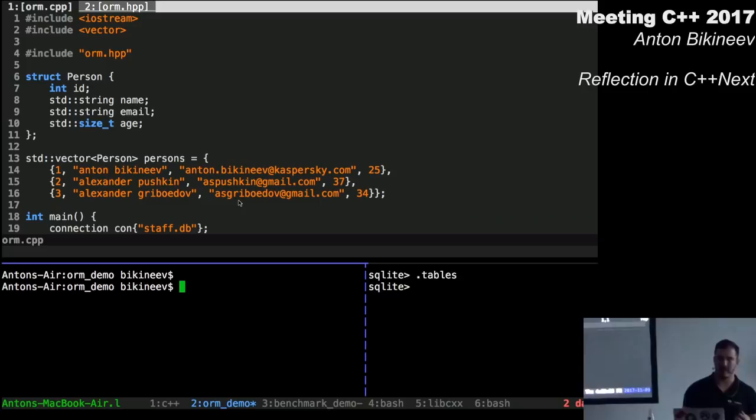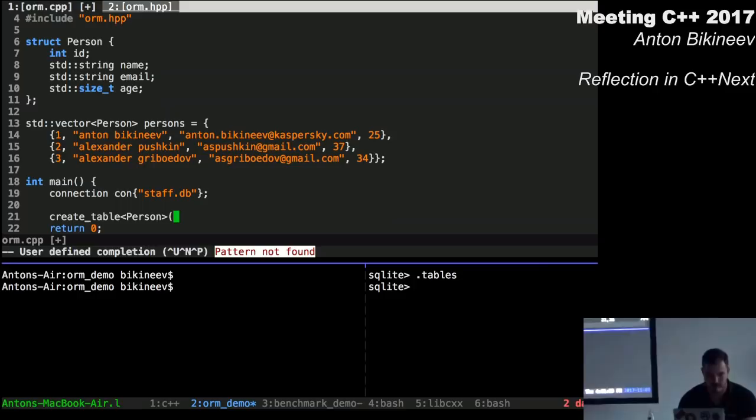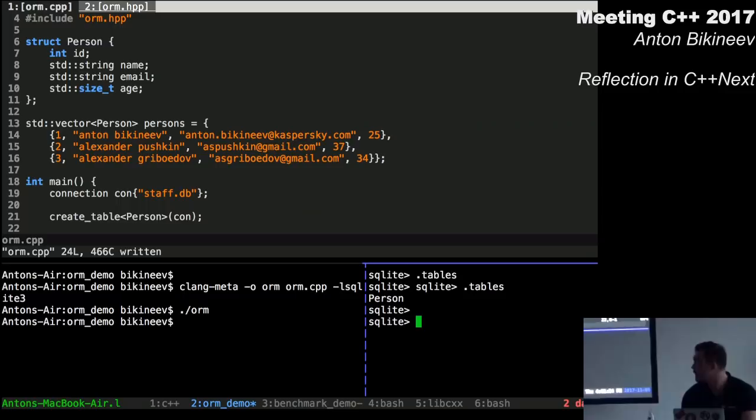So let's say that we have a struct person with the fields ID, name, email, and age. We have a vector of these persons, and in the main function we have a connection object which represents a connection to an SQLite database called stuffDB. And I have an SQLite shell open in the window at the bottom right corner. So let's create the table that corresponds to the struct person.